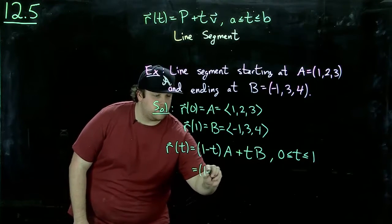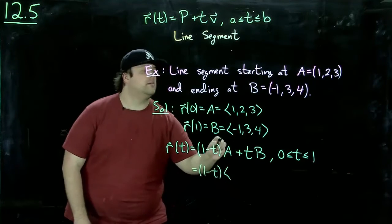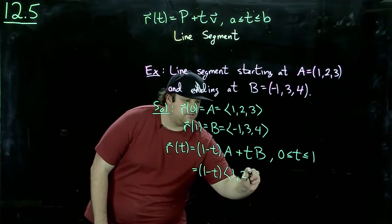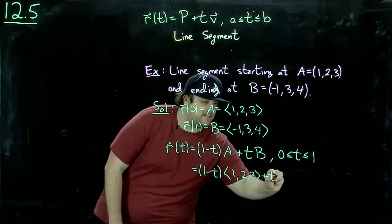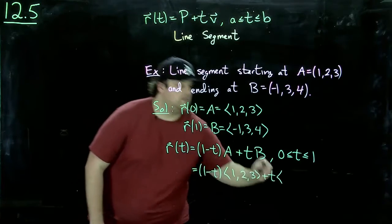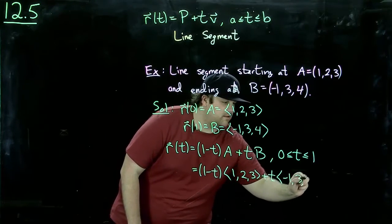So we have one minus t times one, two, three, plus t times minus one, three, four.